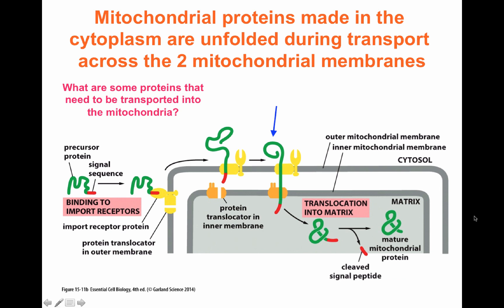The mitochondrion has its own genome, but not all proteins intended for the mitochondria are encoded by the mitochondrial genome. Some are encoded in the nucleus, so the RNA for those proteins is transcribed from nuclear genes and the proteins are translated in the cytoplasm. Those proteins are kept unfolded by chaperones, which prevent the protein from assuming a functional conformation. Proteins in the cytoplasm targeted for the mitochondria need to cross two membranes — the outer membrane and the inner membrane — requiring a double membrane transport system.